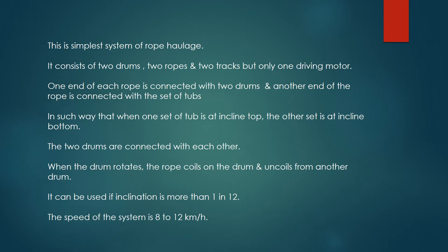When the drum rotates, the rope coils on the drum and uncoils from another drum. It can be used if the inclination is more than 1 in 12. The speed of the system is 8 to 12 km per hour.